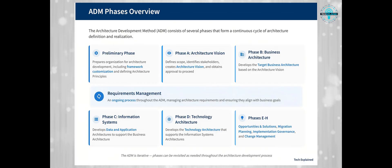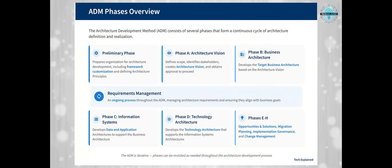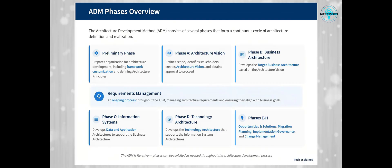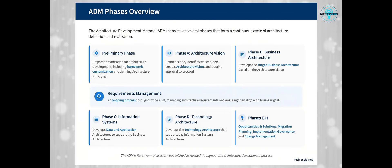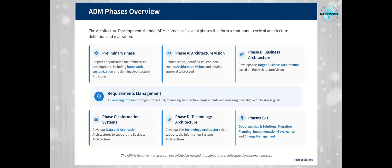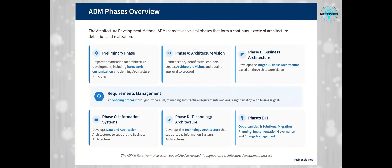Phase B is Business Architecture, where you develop the target business architecture. Phase C covers Information Systems Architectures, which includes both data and application architectures. Phase D is Technology Architecture, where you develop the technology architecture. Phase E is Opportunities and Solutions, where you identify delivery vehicles — projects, programs — for the target architecture and start implementation planning. Phase F is Migration Planning, where you finalize a detailed implementation and migration plan.